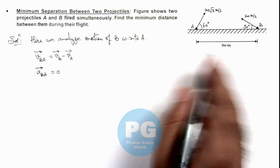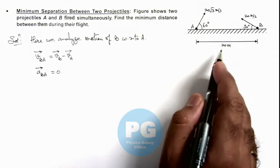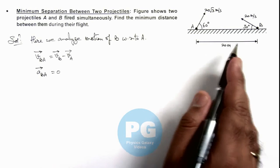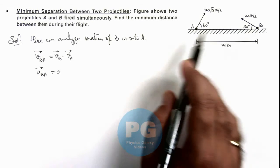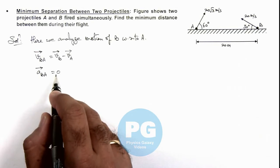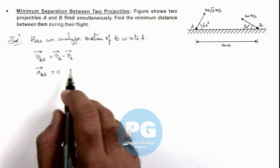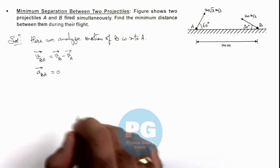Because both are having their acceleration in the y direction, that is minus g. If the relative acceleration of B with respect to A is zero, then we can say B would be traveling in a straight line with respect to particle A.